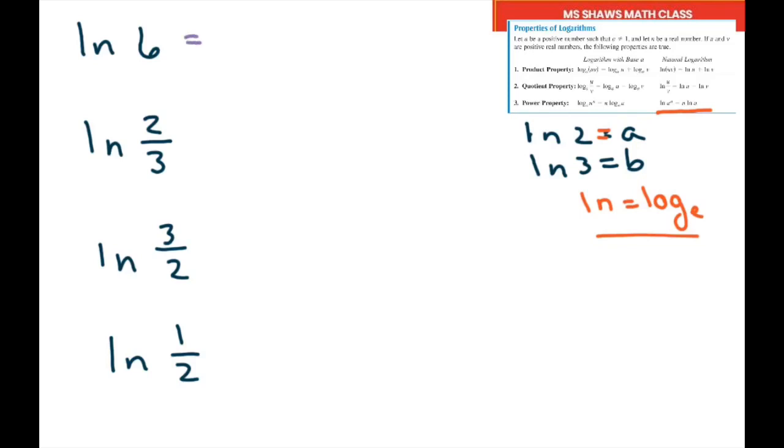I'm going to first write this as ln of 2 times 3, or you could do 3 times 2. Now I'm going to use my product property and expand this to ln of 2 plus ln of 3. Now I'm going to substitute ln of 2 equals a and ln of 3 equals b.